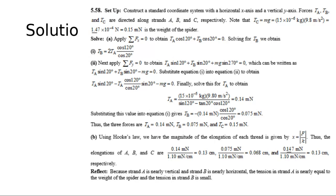The tension on C will be the mass of the spider times G — the acceleration due to gravity at 9.8 m/s². The spider mass was 15 milligrams, which we convert to kilograms. Multiplying in SI units gives kilogram·meter/s² — that's Newtons. So the tension along strand C is 1.47×10⁻⁴ Newtons, directed straight down. That's the weight of the spider.